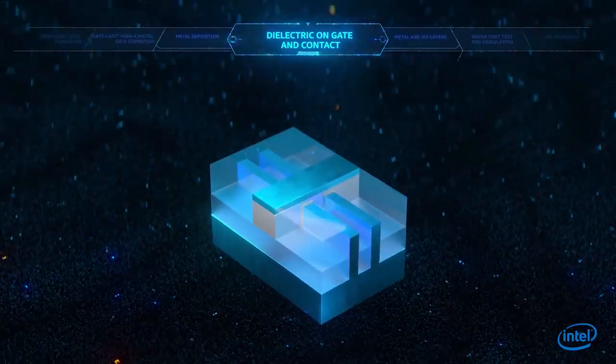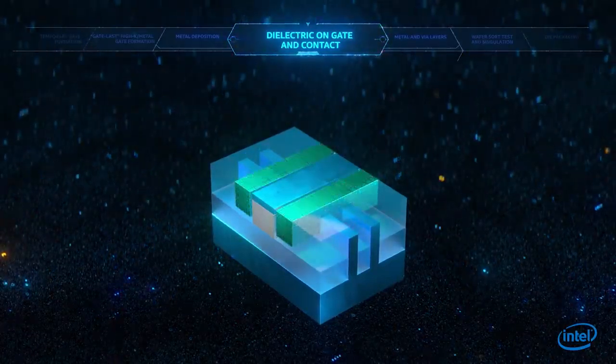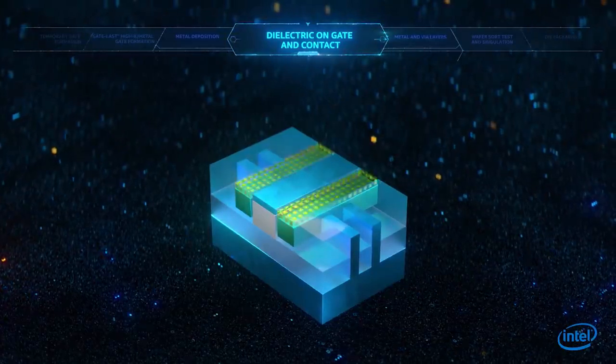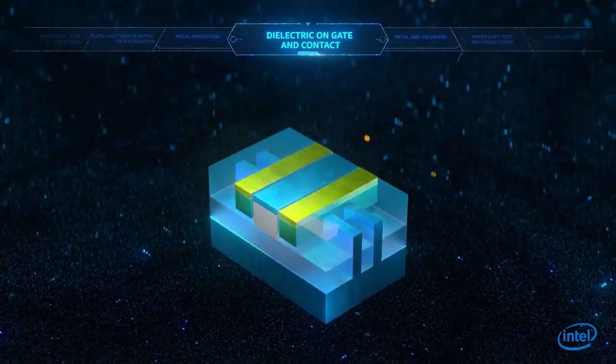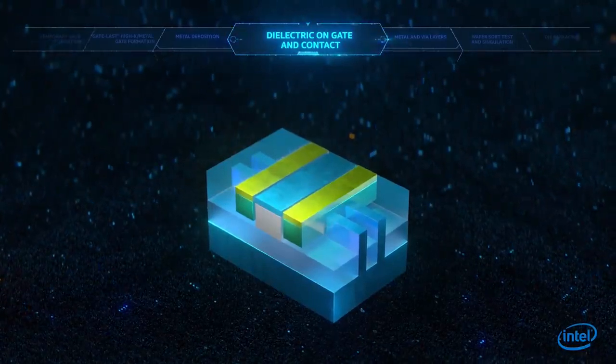Next, the dielectric near the gate is etched, filled with metal, recessed, and capped to allow a novel self-aligning process that enables the high-density contact geometries.